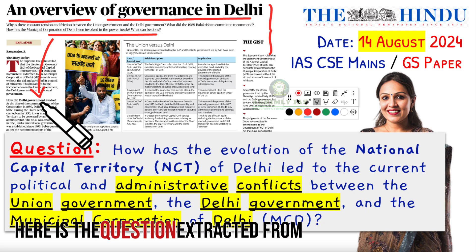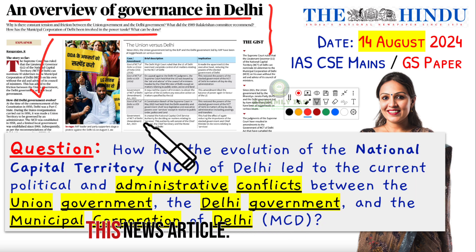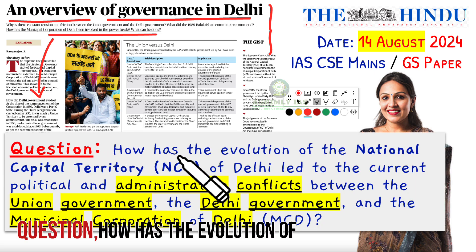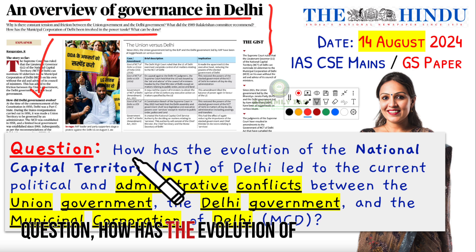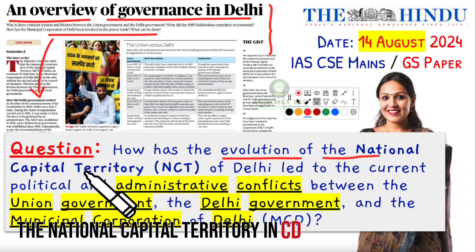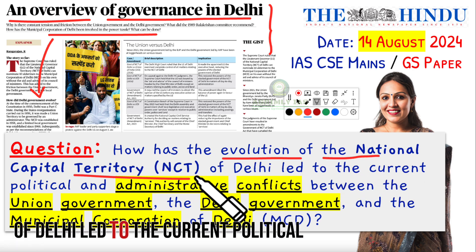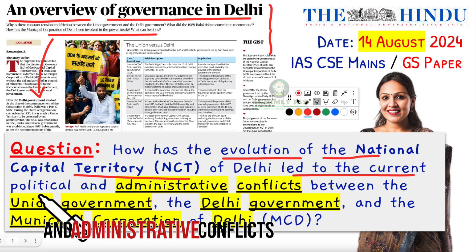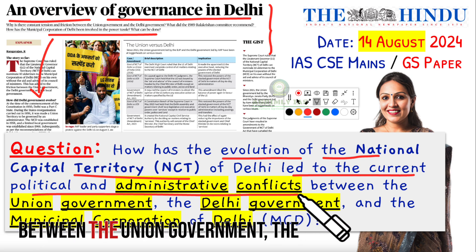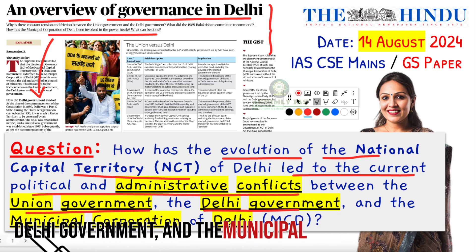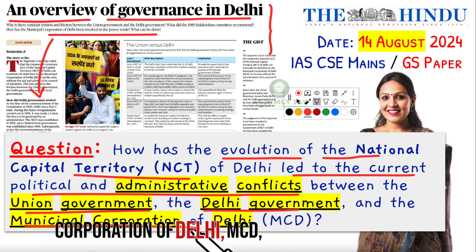Here is the question extracted from this news article. Question: How has the evolution of the National Capital Territory (NCT) of Delhi led to the current political and administrative conflicts between the Union Government, the Delhi Government, and the Municipal Corporation of Delhi (MCD)?